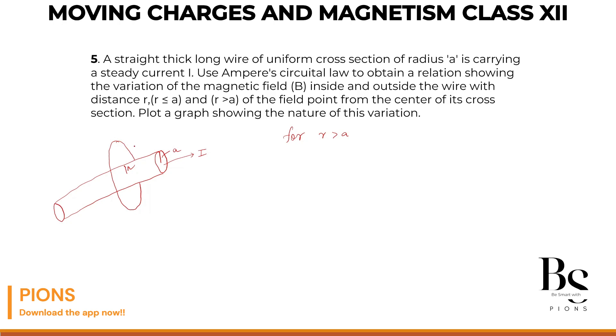So only why this much? You can choose this much also, doesn't make any difference. So this outside loop, what is the radii of this loop? R. For R greater than A, what will be the magnetic field at that point, at a distance R from the center of this wire?